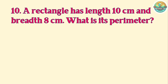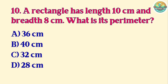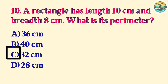Question 10. A rectangle has length 10 cm and breadth 8 cm. What is its perimeter? A. 36 cm. B. 40 cm. C. 32 cm. D. 28 cm. Correct answer is C. 32 cm.